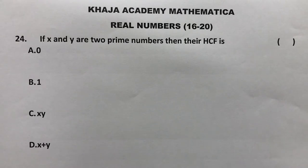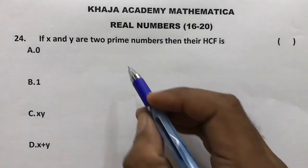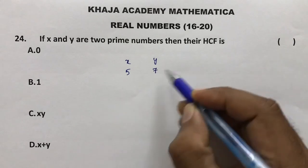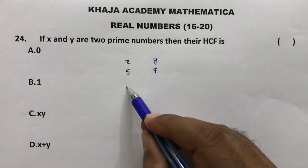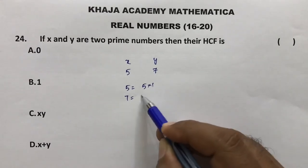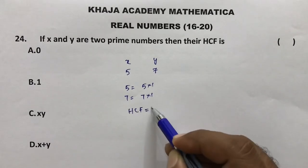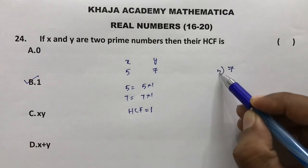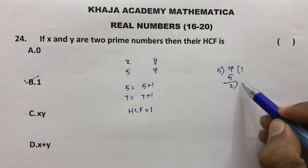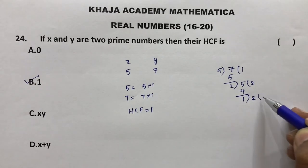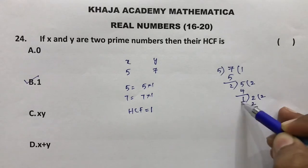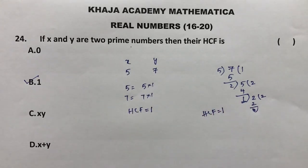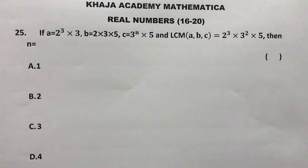If x and y are two prime numbers, what is their HCF? Taking examples: x = 5 and y = 7. We can write 5 = 5 × 1 and 7 = 7 × 1, so their HCF is 1. Verified by division method: dividing 7 by 5 gives remainder 2, then 5 by 2 gives remainder 1, then 2 by 1 gives remainder 0, so HCF = 1. The correct option is D.